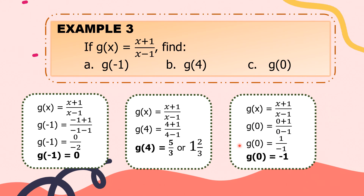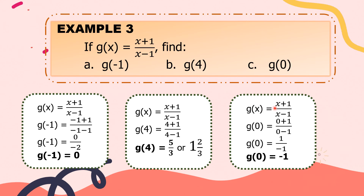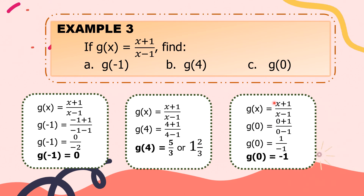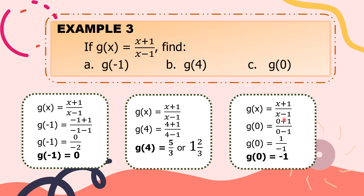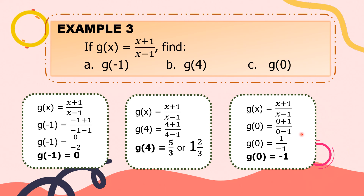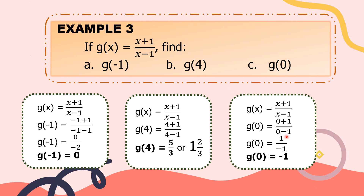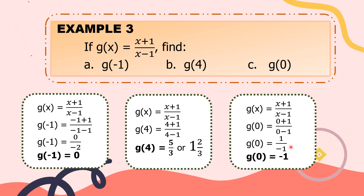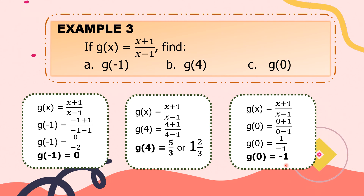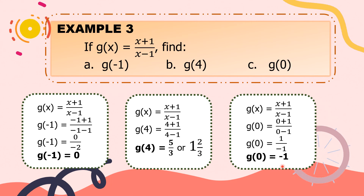For letter c, our x is 0. We substitute all x's with 0. So g of 0 equals (0 plus 1) over (0 minus 1). 0 plus 1 is 1; 0 minus 1 is negative 1. Simplifying, 1 over negative 1 — 1 divided by negative 1 is equal to negative 1. Thus, g of 0 is equal to negative 1.